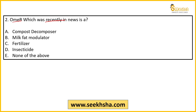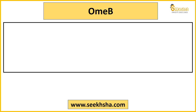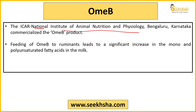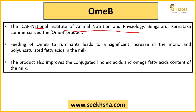This is why we say you need to diversify your reading, but in a smart way. Here questions are covered quickly in a shorter format. OMB is a milk fat modulator, developed by ICAR's National Institute of Animal Nutrition and Physiology, and is now being commercialized. When fed to ruminants — cows, buffaloes — it increases mono- and polyunsaturated fatty acids in the milk, and also improves linoleic acid and omega fatty acids content, thereby improving overall milk quality.